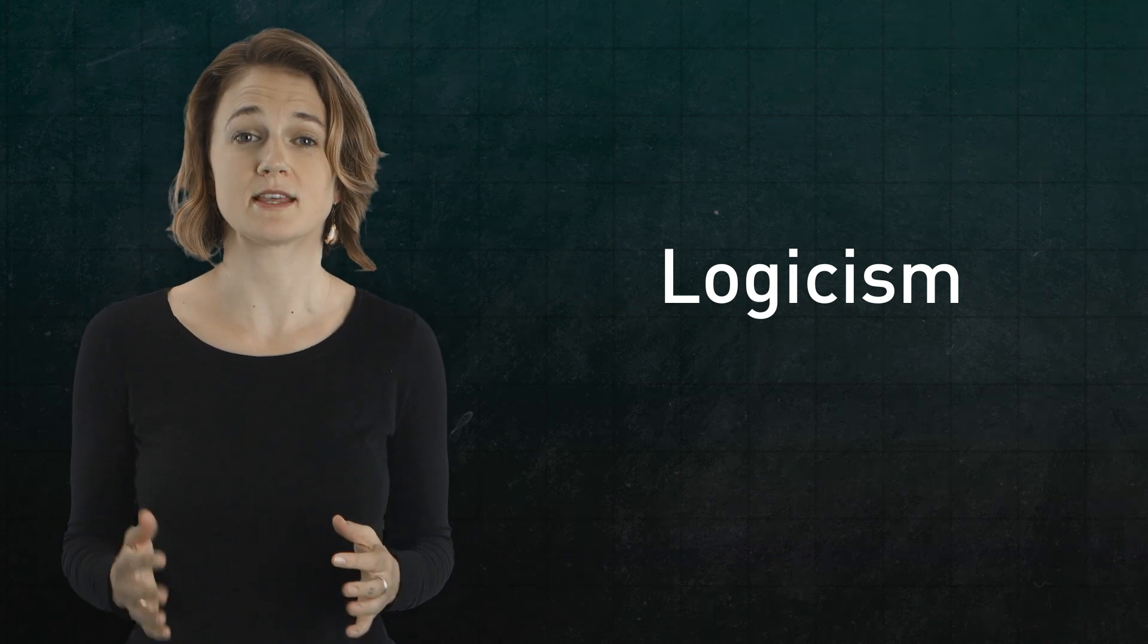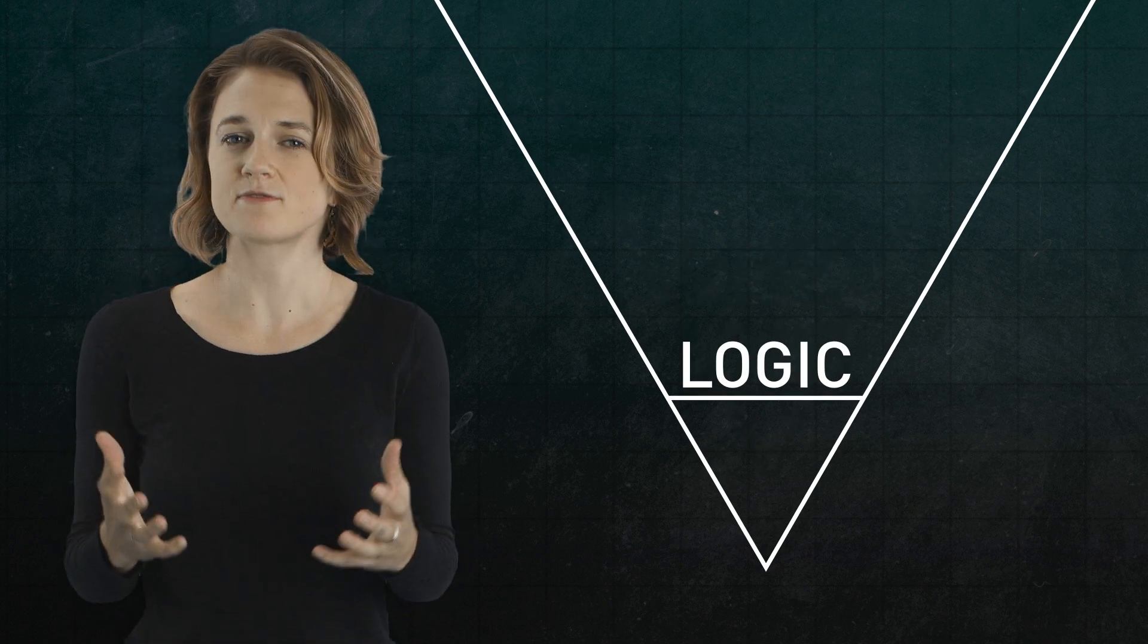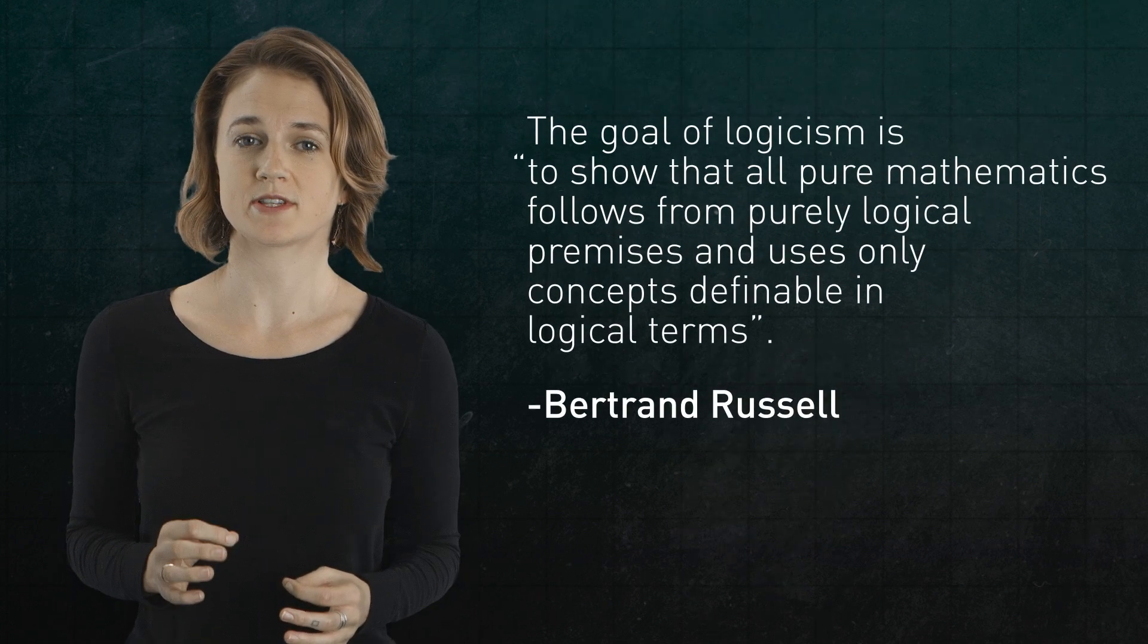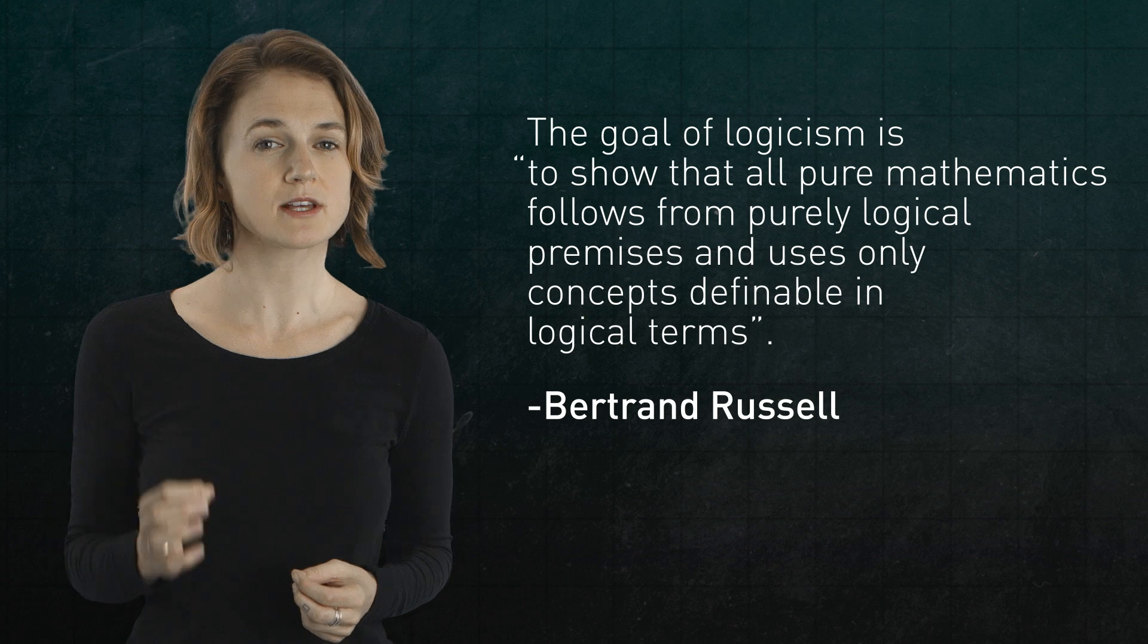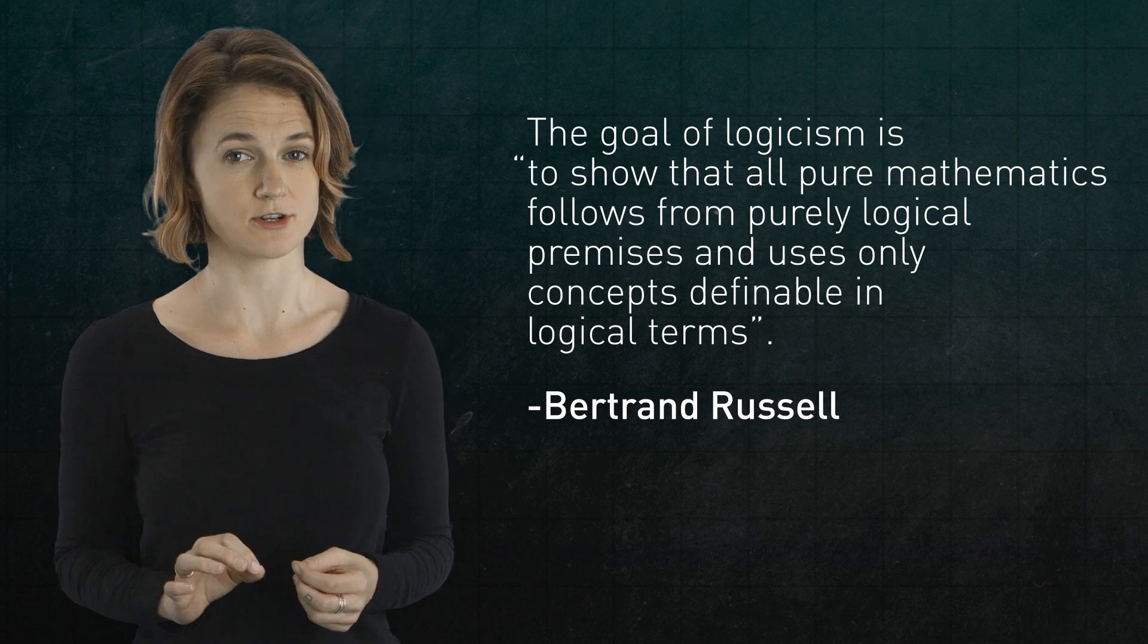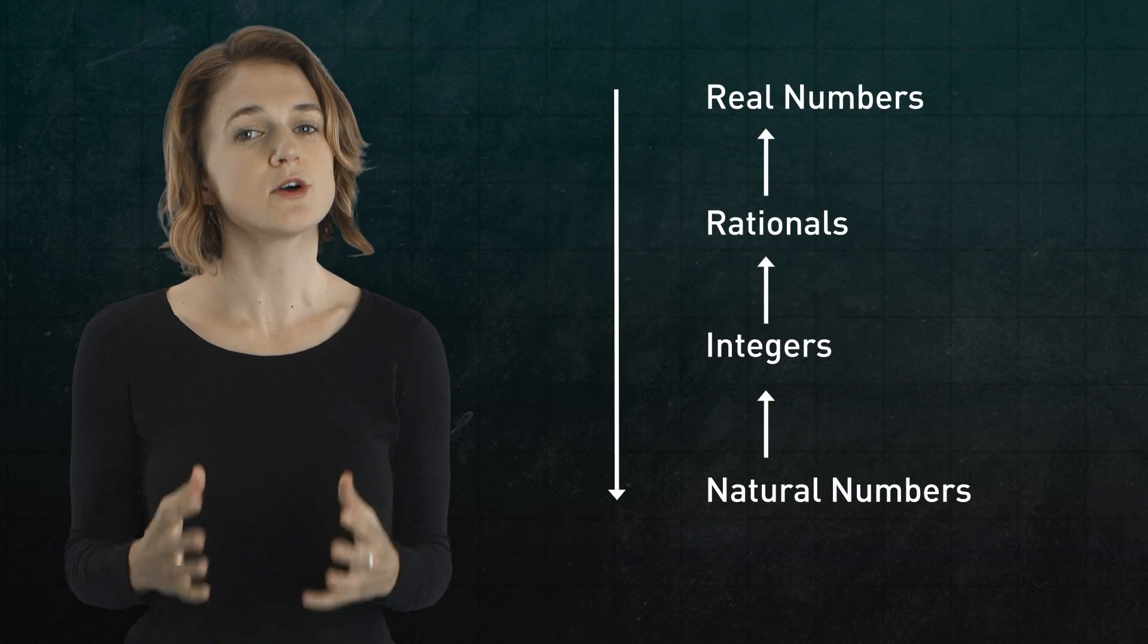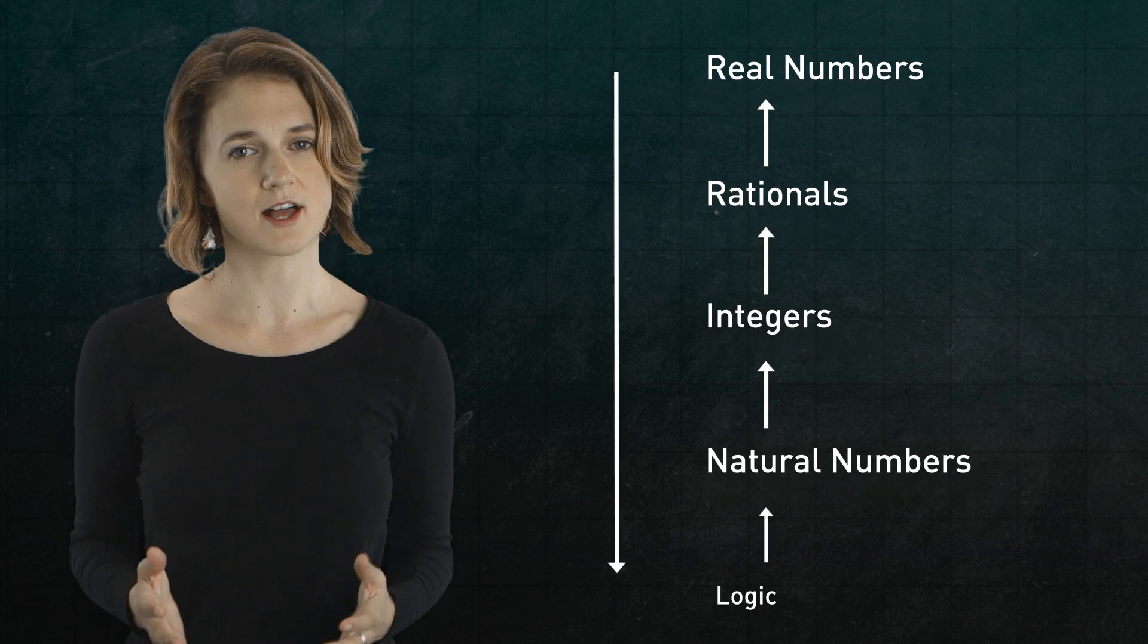Basically, logicism says that the bottom of the pyramid of mathematics is logic. Mathematics is founded in logic. Essentially, mathematics is logic. In Russell's words, the goal of logicism is to show that all pure mathematics follows from purely logical premises and uses only concepts definable in logical terms. Just as we reduced all statements about the real numbers to statements about natural numbers, the logicist wants to reduce the natural numbers, and everything else, to logic.